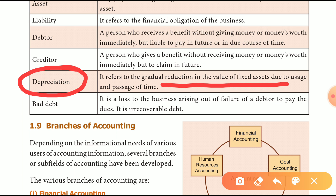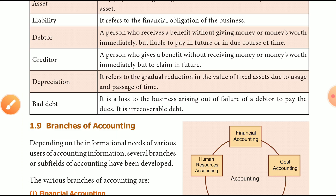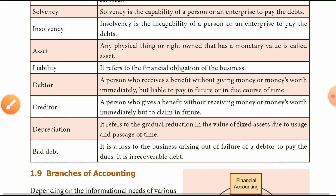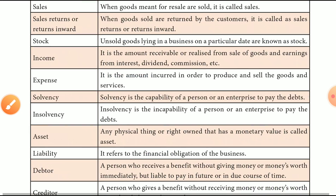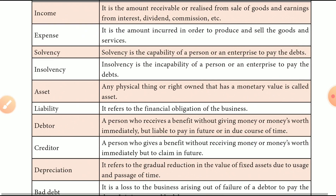The next is Bad Debt. Bad Debt is when a debtor is unable to pay back the amount owed. If you have a plan and it cannot be recovered, it is called Bad Debt.